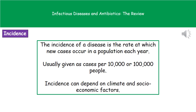Another term to understand is incidence. When referring to the incidence of a disease, we mean the rate at which new cases occur in a population each year — normally expressed as cases per 10,000 or cases per 100,000 people.